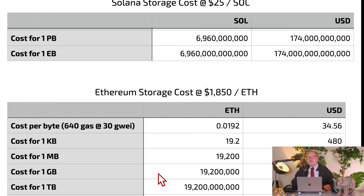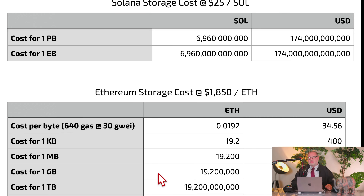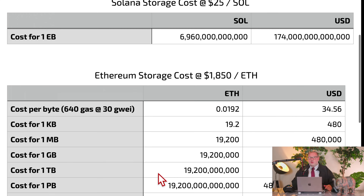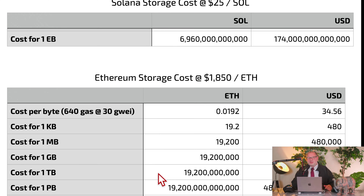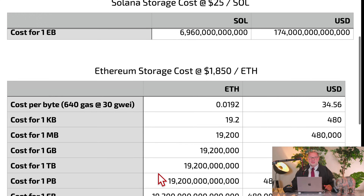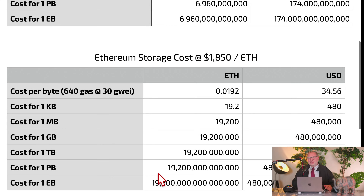Remember, it was 17 cents on Solana. The factor from Solana to Ethereum is about 2,750 — it costs roughly 2,758x more on Ethereum to store data than on Solana. For one megabyte, which is almost nothing, you already pay $480,000. And for one gigabyte, it's $480 million.